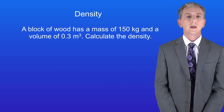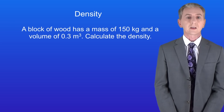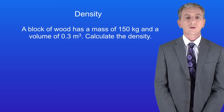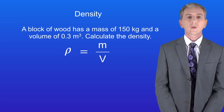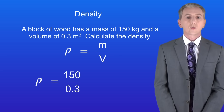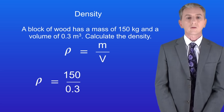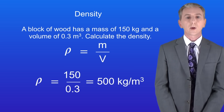Here's a question for you to try. A block of wood has a mass of 150 kilograms and a volume of 0.3 meters cubed. Calculate the density. Pause the video and try this yourself. The density equals the mass divided by the volume. The mass is 150 kilograms and the volume is 0.3 meters cubed. Putting these into the equation gives us a density of 500 kilograms per meter cubed.